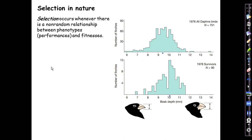In the previous segment, we developed the basic model for selection on a quantitative trait in the context of the breeder's equation, which was motivated by the practice of artificial selection in an agricultural context. In this segment, we'll modify this scheme slightly to fit more conveniently the way selection actually works in nature. Whether in nature, in the lab, or in a plant breeding institute, selection is happening if there is any sort of non-random relationship between phenotypes and fitnesses.